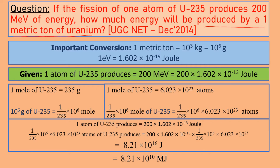What is given in this question? One atom of uranium-235 produces 200 mega electron volts. First of all, you need to know the concept. You have to find the relation between atom and metric ton.